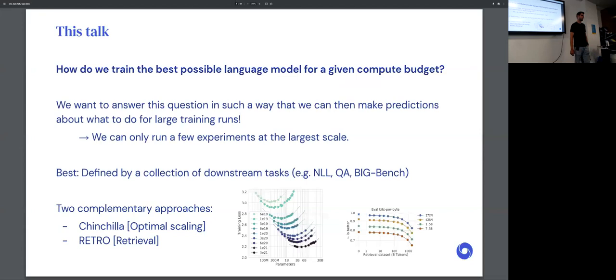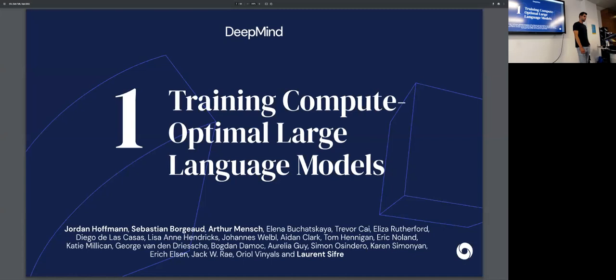I won't go too much into the best part of this question and just assume we have downstream tasks we can optimize. It could be negative log likelihood on held out datasets, it could be a question and answer benchmark, etc. So we can get some schedule for more optimal training of dense transformers, and the second one is Retro. So yeah, let's get started with Chinchilla.